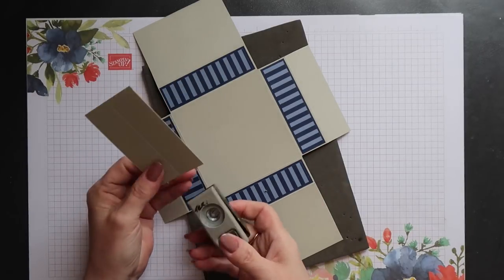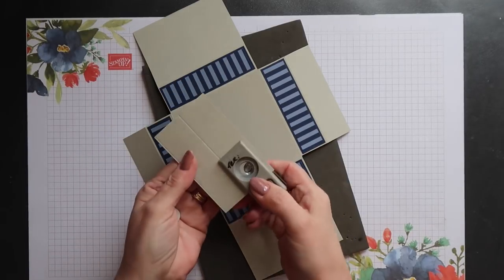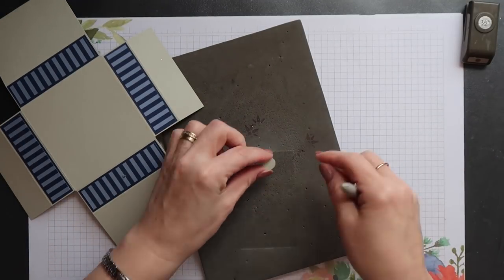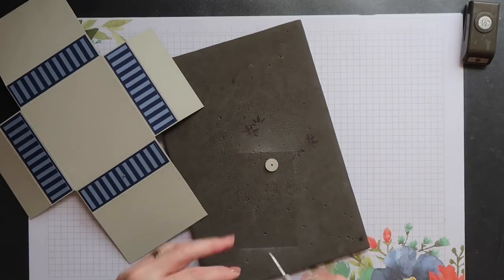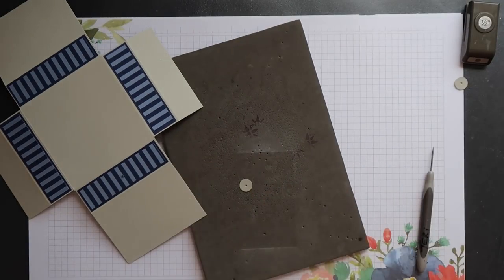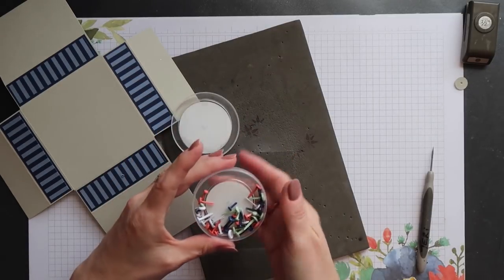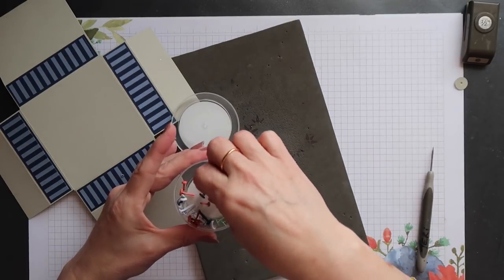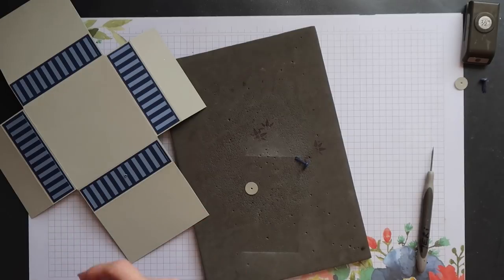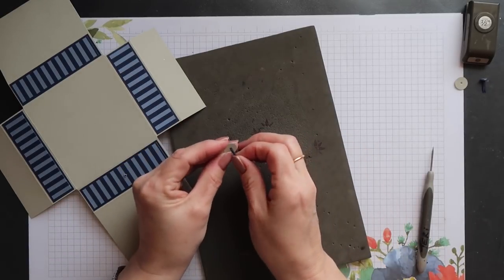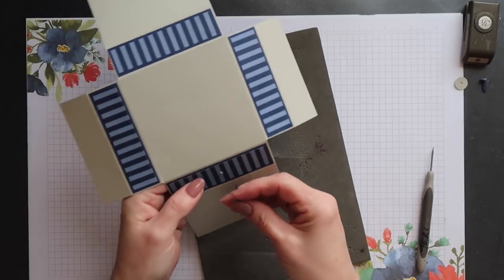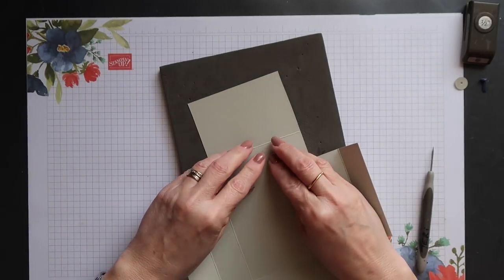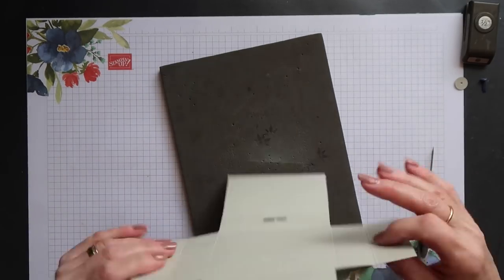For the closure you want to punch out two half inch circles. I'm using Sahara Sand card. You then want to pierce the hole through the center of these. Now I'm using some of our now retired basic brads in Night of Navy, but you can use any brads for the closure as long as they're not too small. Push the brad through the half inch circle and then through the front panel of your box. You want to keep the brad nice and loose so you can wrap the twine around it later.